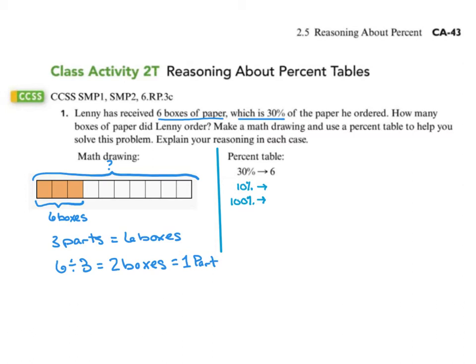So finding the value of all of the boxes, or the total, would be 10 times two, or 20 boxes represents the total amount ordered, 100%.